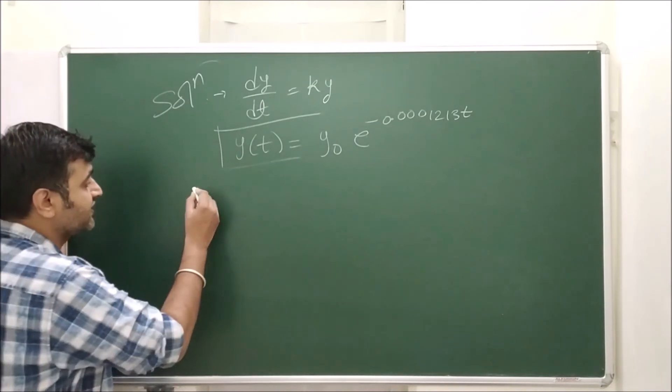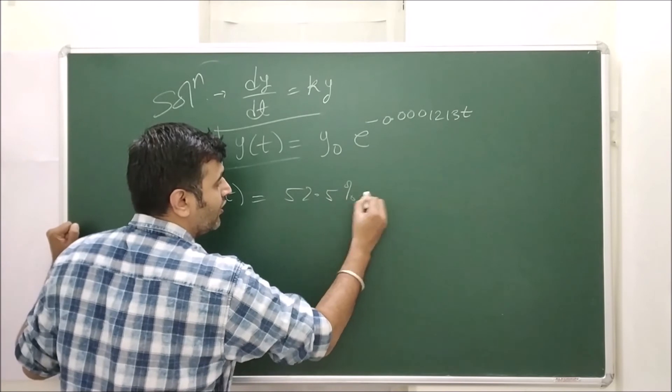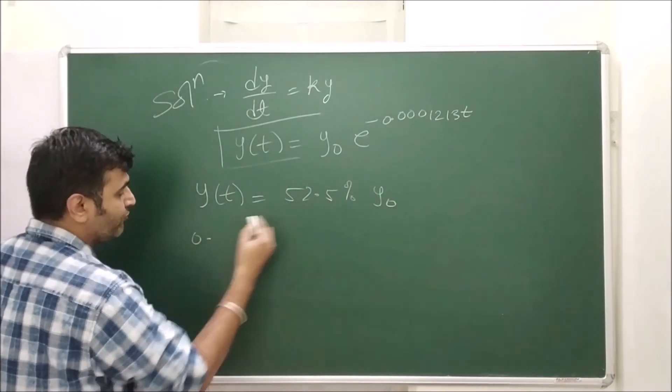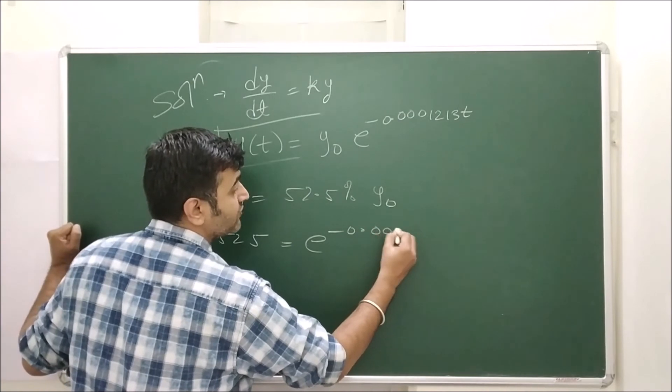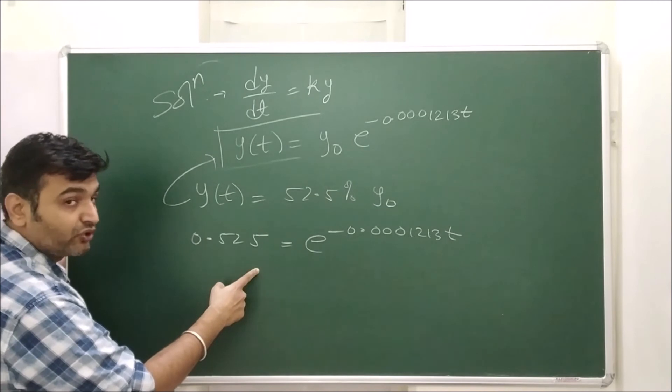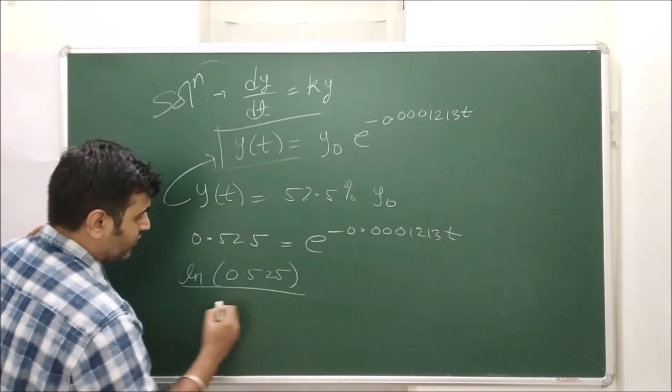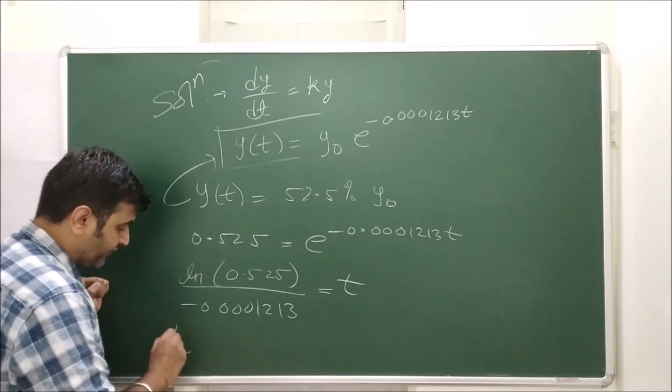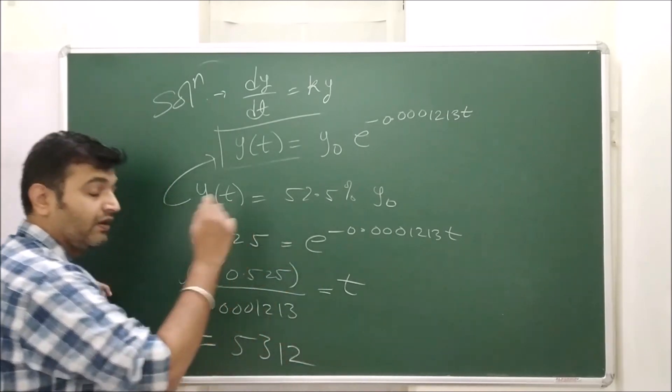Now we want to use this condition. Your y(t) is 52.5% of y0. So what I will have is 0.525 = e^(-0.0001213t). You simply put the value. Now again, you take ln on both sides. ln(0.525) / (-0.0001213) = t. When you solve this, your t comes out to be 5,312.